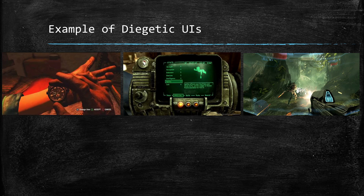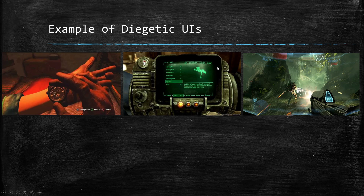Some examples of diegetic UI: in Halo, you can see the gun with the number of ammo left. If you are the character holding that gun, you'd see the same ammo count — it's on the weapon itself, not an on-screen overlay. In Fallout 4, there's the Pip-Boy, a device you wear on your arm to see game information. If you are the character, you're the one wearing it and seeing that screen. Similarly, if a character in the game wears a watch and can see it, that's diegetic UI.